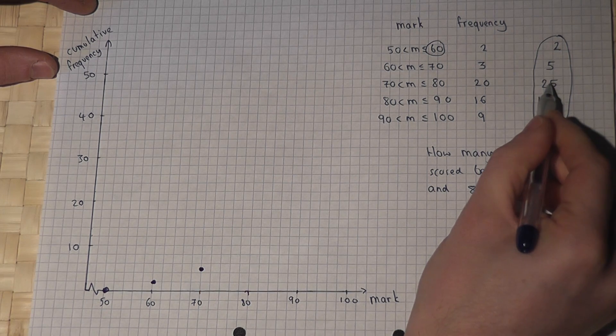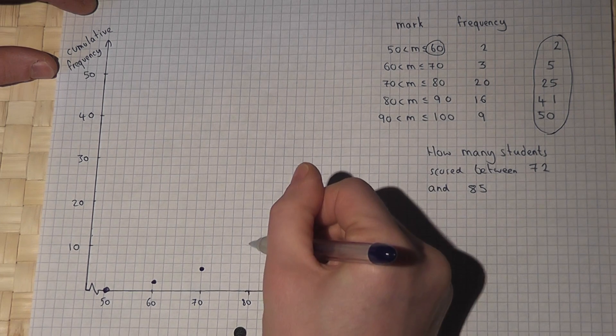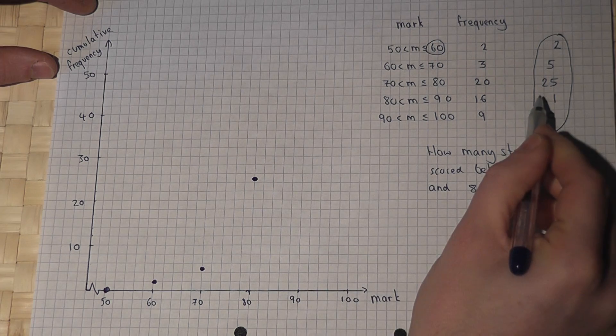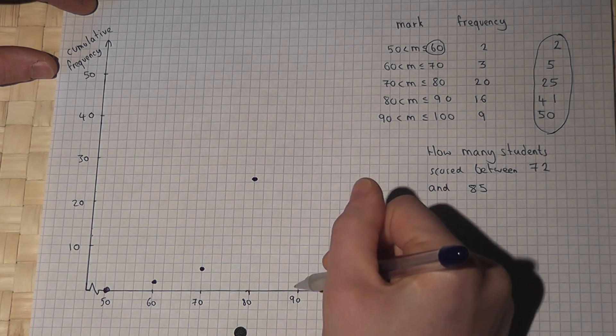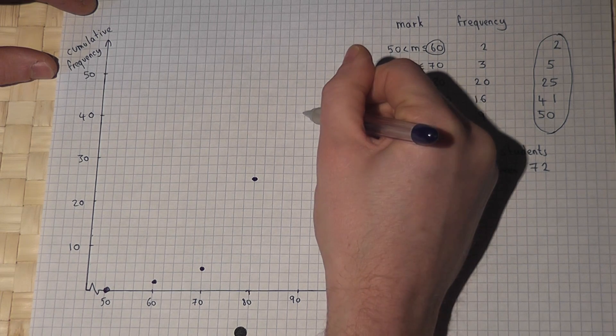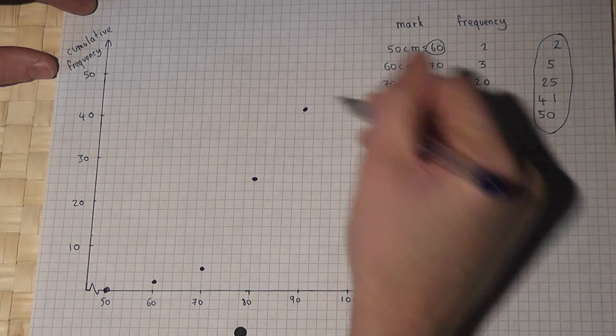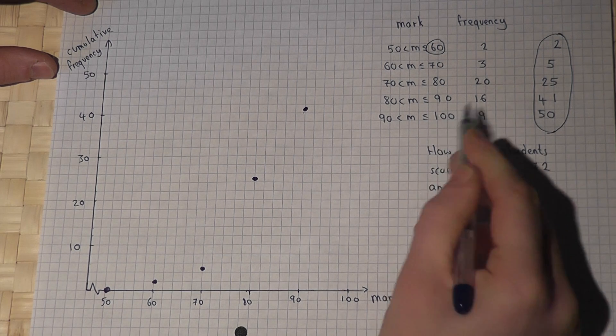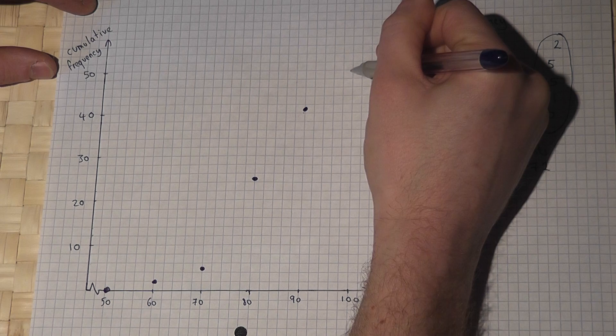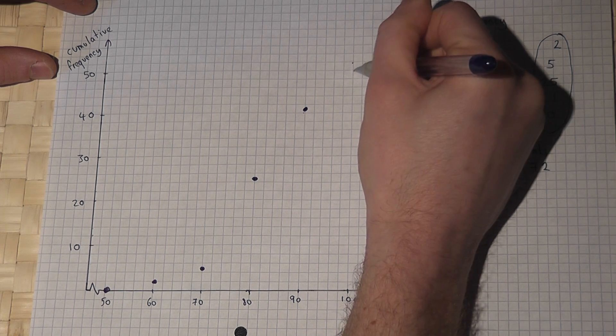25 people scored less than 80 so I find 80 and then find 25. 41 people scored less than 90 so I go up to 50 which is up here.